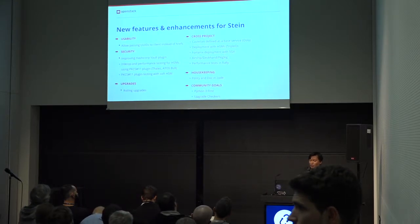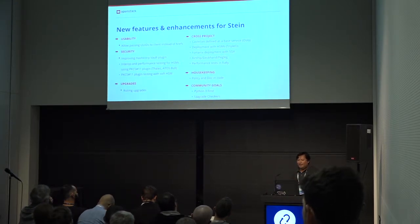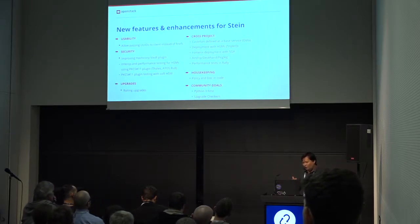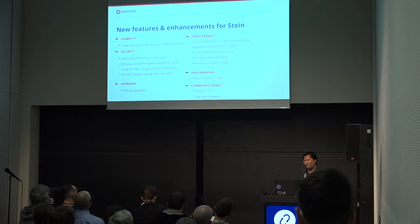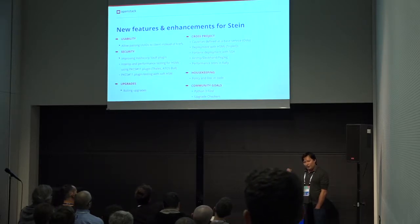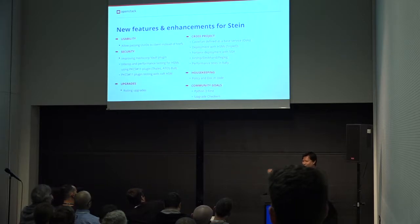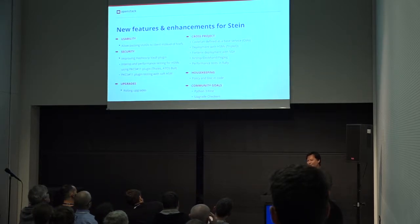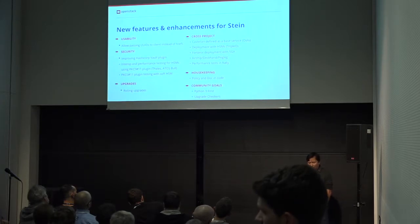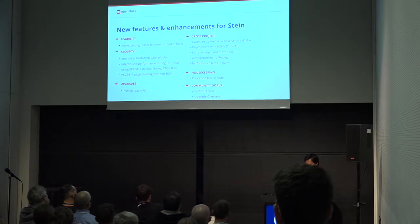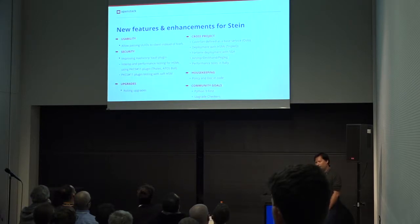A lot of OpenStack services now use Castellan to go and get their secrets, which then routes through to Barbican. The importance of it being a base service is that with the renewed focus on security in OpenStack, applications should be able to say 'store a secret securely somewhere,' and as part of OpenStack development you should have a Castellan-compatible key store. There are currently two implementations: Vault and Barbican.